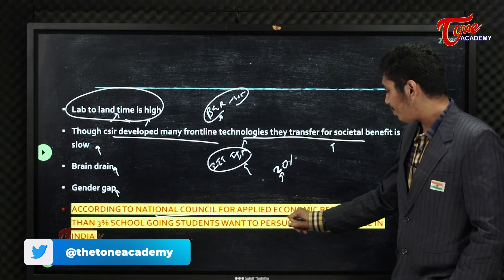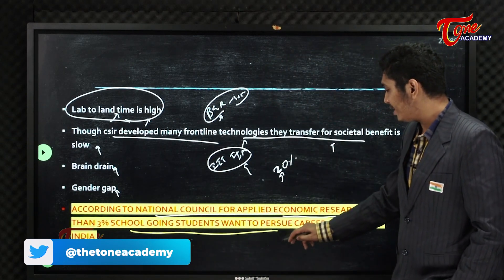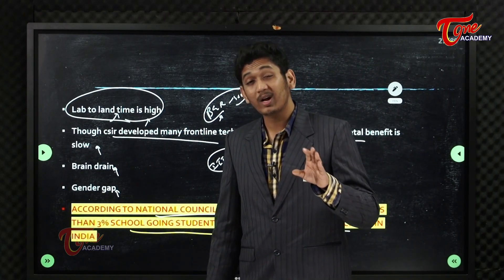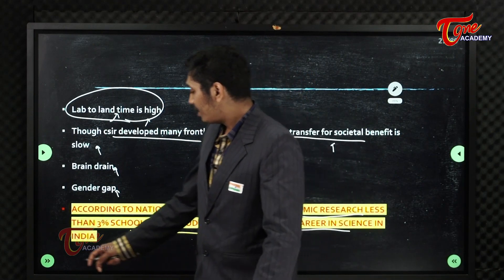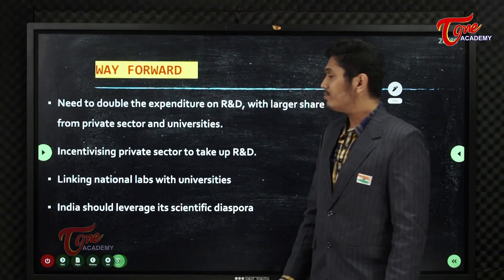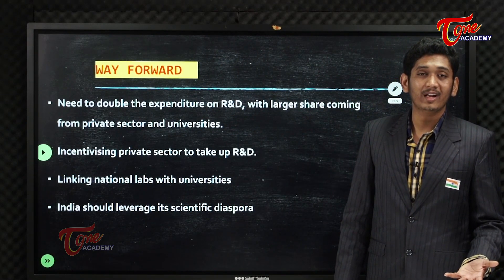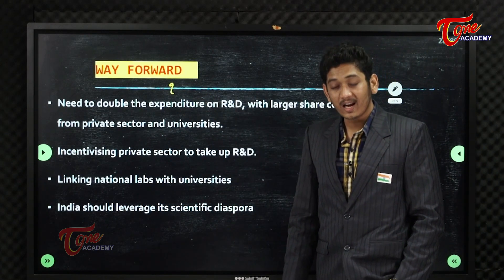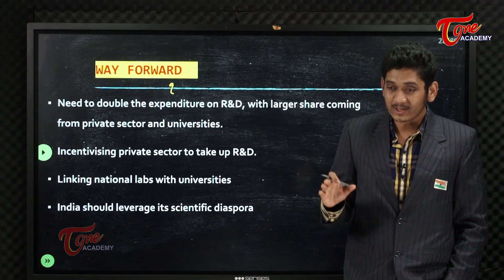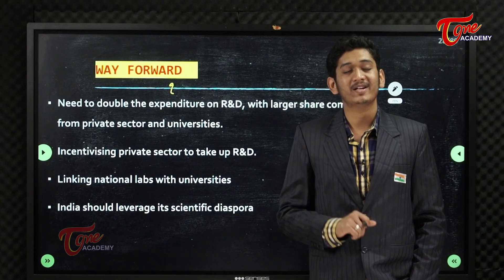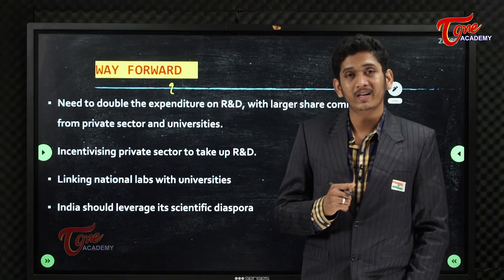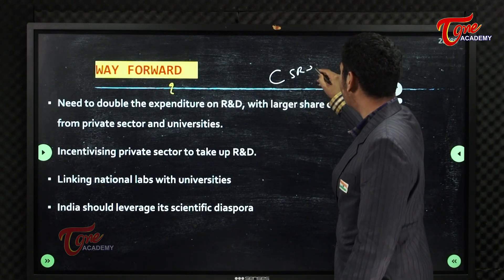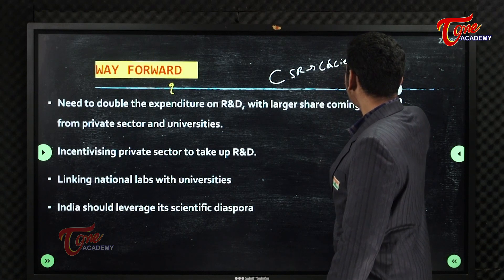According to the National Council for Applied Economic Research, less than 3% of school-going students want to pursue a career in science in India. Most prefer commerce or engineering. One proposed approach is corporate scientific responsibility — analogous to CSR (Corporate Social Responsibility) — to address this and incentivize science uptake.